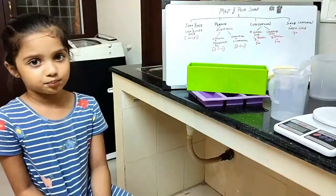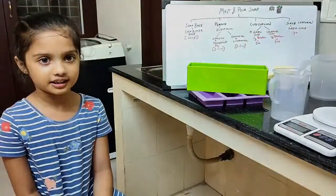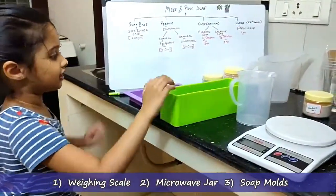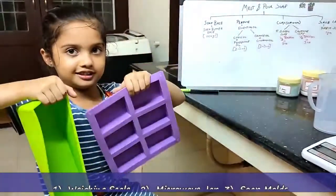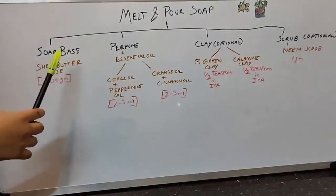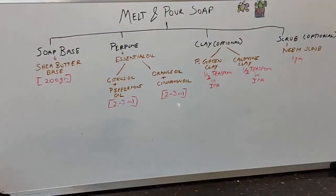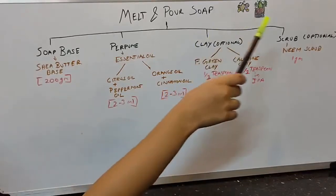For making a melt and pour soap, we need a few ingredients. We need green clay, a jar, and some more. For melt and pour soap, we mainly need soap base and perfume. We can also use clay and scrub.